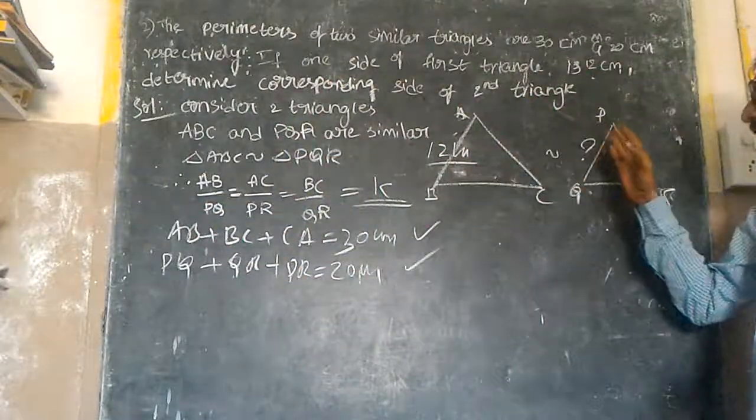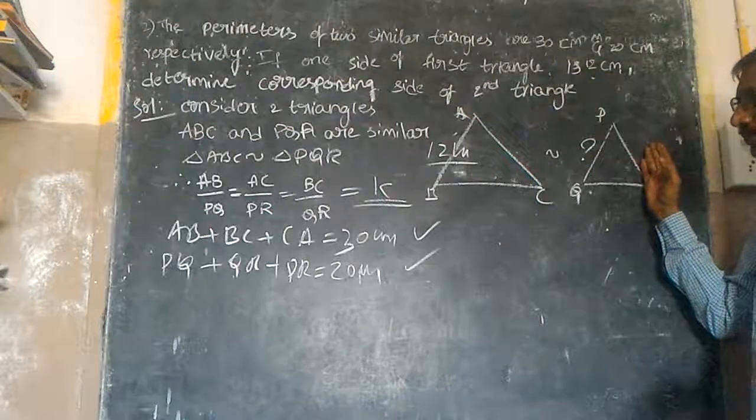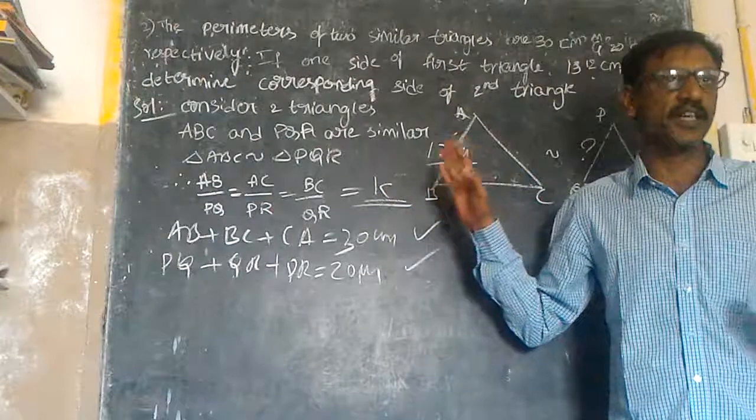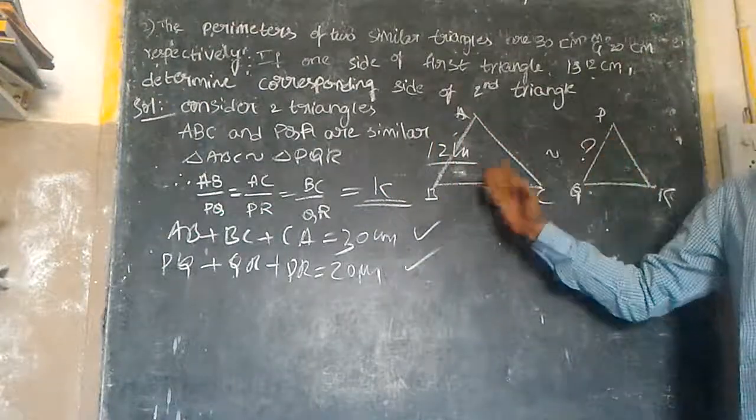AB by PQ, BC by QR, and AC by PR, that is all equal to K. K is a scale vector.